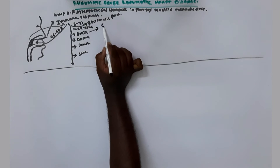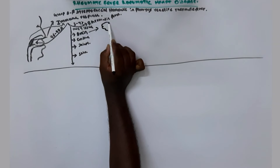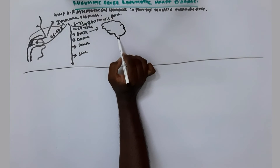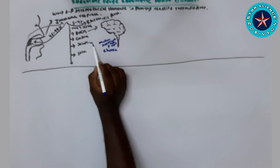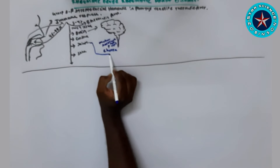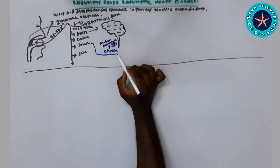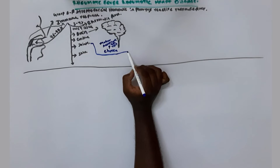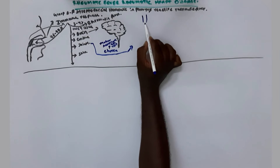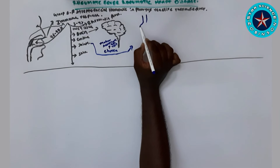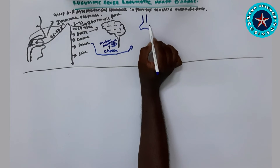When the brain is affected by rheumatic fever, the condition is called chorea — a movement disorder that causes involuntary, irregular, and unpredictable muscle movements.